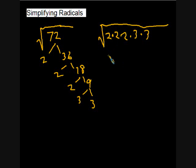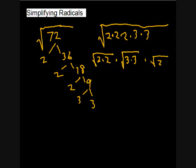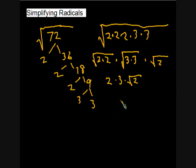Breaking it up: square root of two times two equals two, square root of three times three equals three, times square root of two. That gives us six times the square root of two. So six times the square root of two equals the square root of seventy-two.